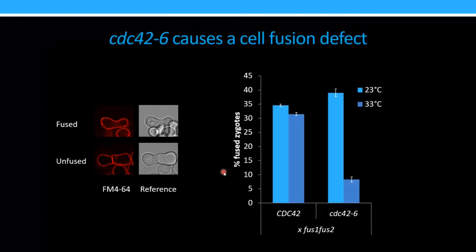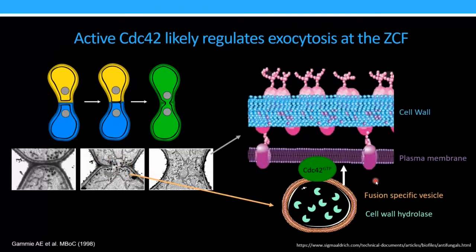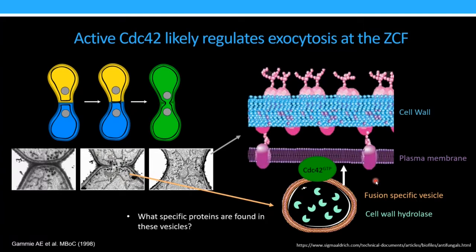And so when I did these experiments at the end of my graduate career, what I found was that the CDC42-6 allele, when compared to the wild type version, had a pretty drastic cell fusion defect only at the restrictive temperature. And so this led us to conclude, along with many controls that we did, that really this secretion-defective allele is blocking fusion. And this is because it's blocking the secretion of those vesicles. So we can sort of add to our model here that CDC42 and FUS2, because they sort of work together, are really promoting this exocytosis of these vesicles. But there's still a question of really what specific proteins are found in there, what are the things that are actually doing this, and how can we detect this?